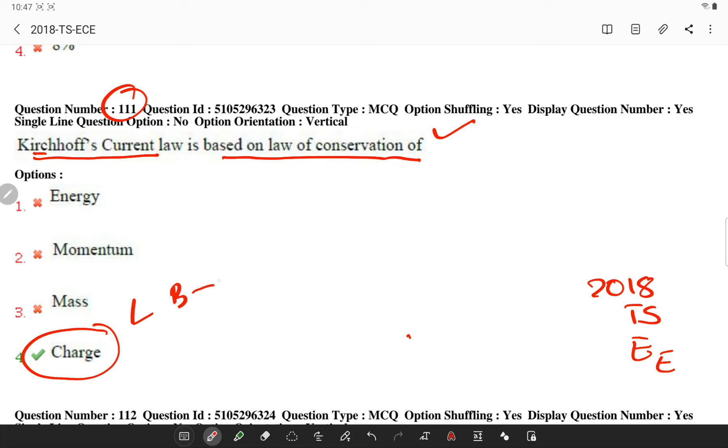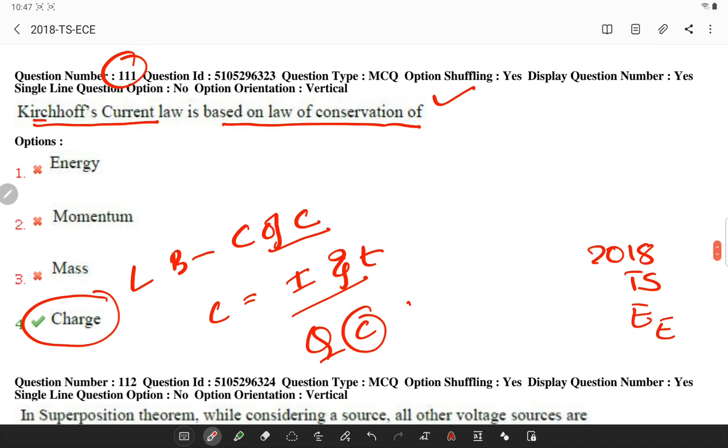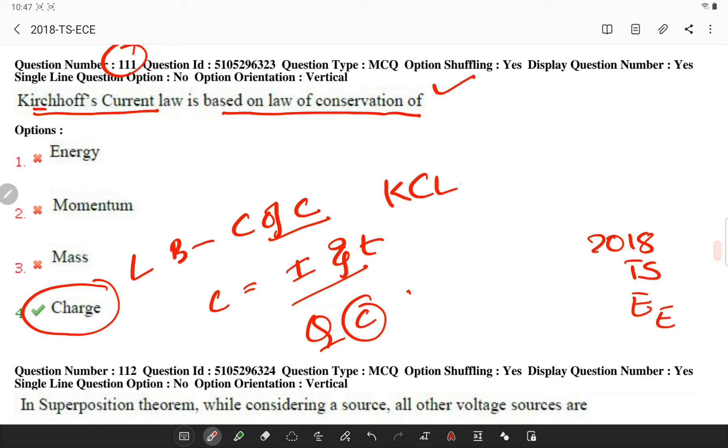The law is based on conservation of charge where the charge is product of current and time. If the net charge in a region is constant, then the current law will hold on the boundaries of the region. KCL is based on principle of conservation of electric charge and KVL is based on the principle of conservation of energy. Try to remember these two points.